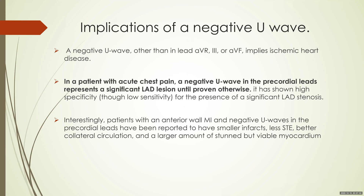What are the implications of a negative U-wave? A negative U-wave, other than in leads AVR, lead 3, or AVF, implies ischemic heart disease. In a patient with acute chest pain, if you have a negative U-wave in the precordial leads, consider it as a significant LAD lesion until proven otherwise. This has poor sensitivity but high specificity. Interestingly, if these patients develop an anterolateral MI, they tend to have smaller infarcts, lesser ST elevation, better collateral circulation, and a larger amount of stunned but viable myocardium.